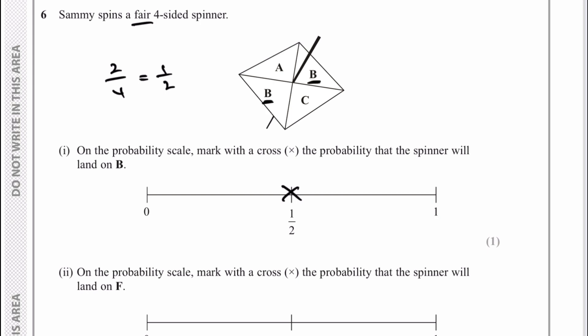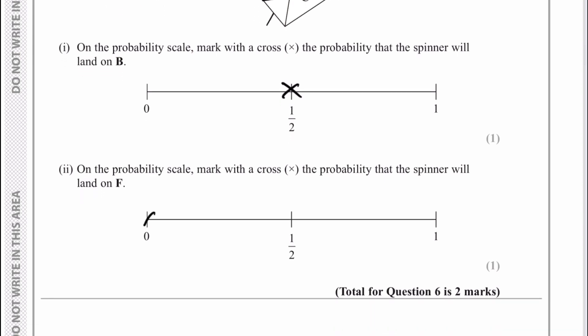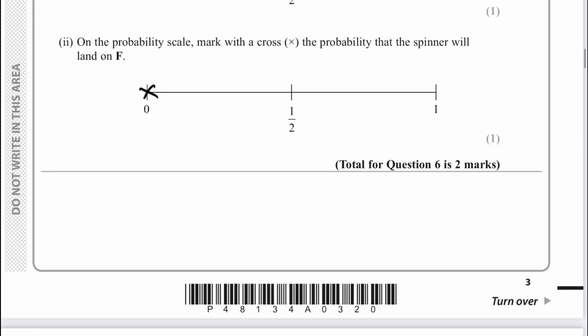Then it says on the probability scale, mark with a cross the probability the spinner will land on an F. It's not going to land on an F because there isn't one, so we'd put it down at zero — which is impossible. You will find probability questions do crop up quite a bit with these sorts of non-calculator papers, so it's well worth practising.